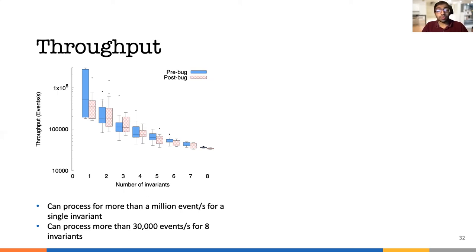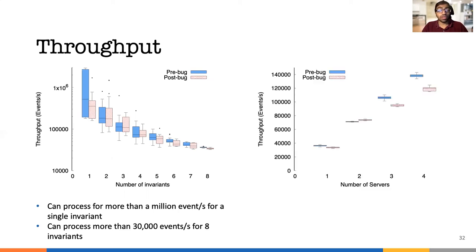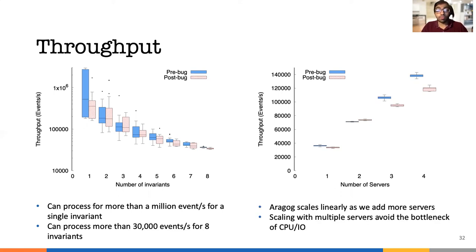For the second experiment, we kept the number of invariants fixed to eight and increased the number of machines used by the global verifier. Our implementation allows us to easily scale up to more than 140,000 events per second using four machines. Scaling with multiple servers avoids the bottleneck of CPU and I/O.